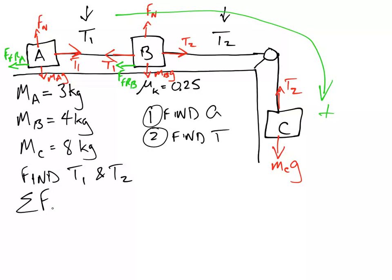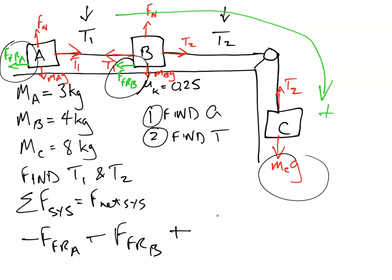So now we're going to do summation of the forces on the system is F net system. So let's write out this equation here. What are we going to have? Negative force of friction A, that guy. Negative force of friction B. And then the other one which counts is positive, this guy, mC g. Understand.